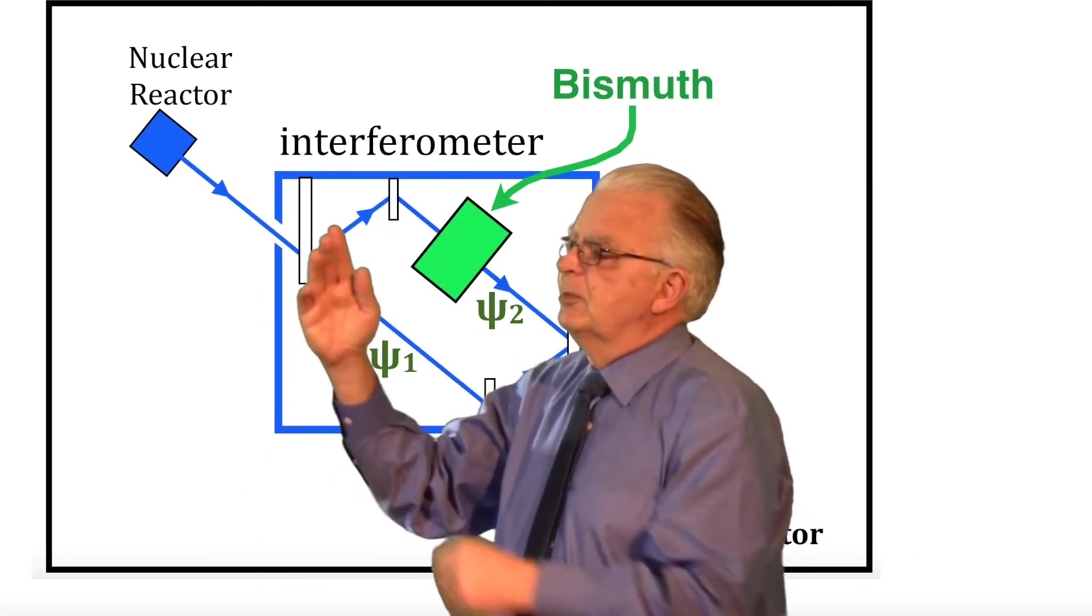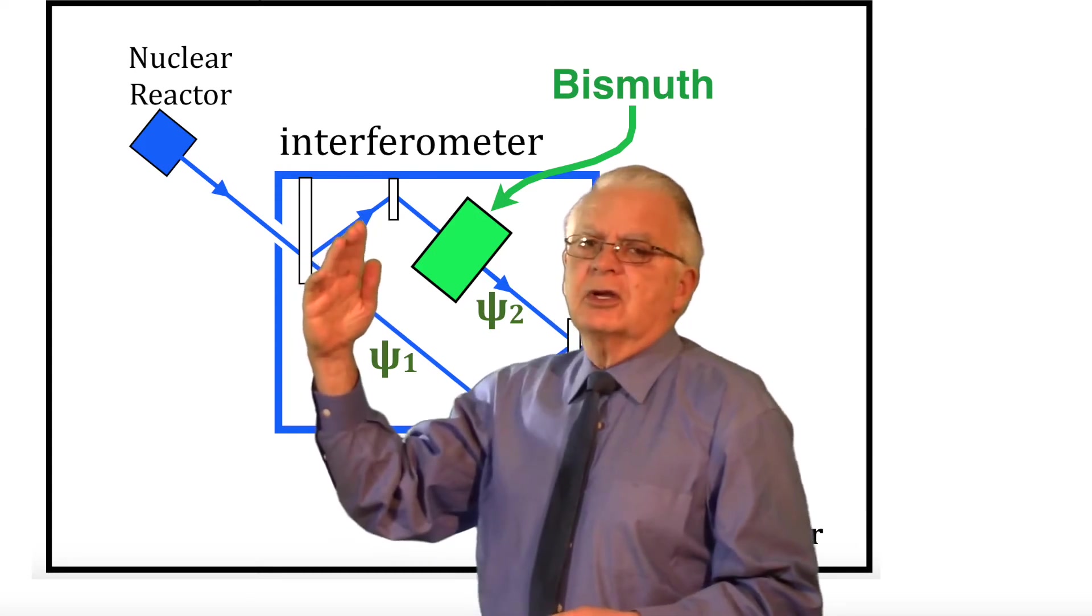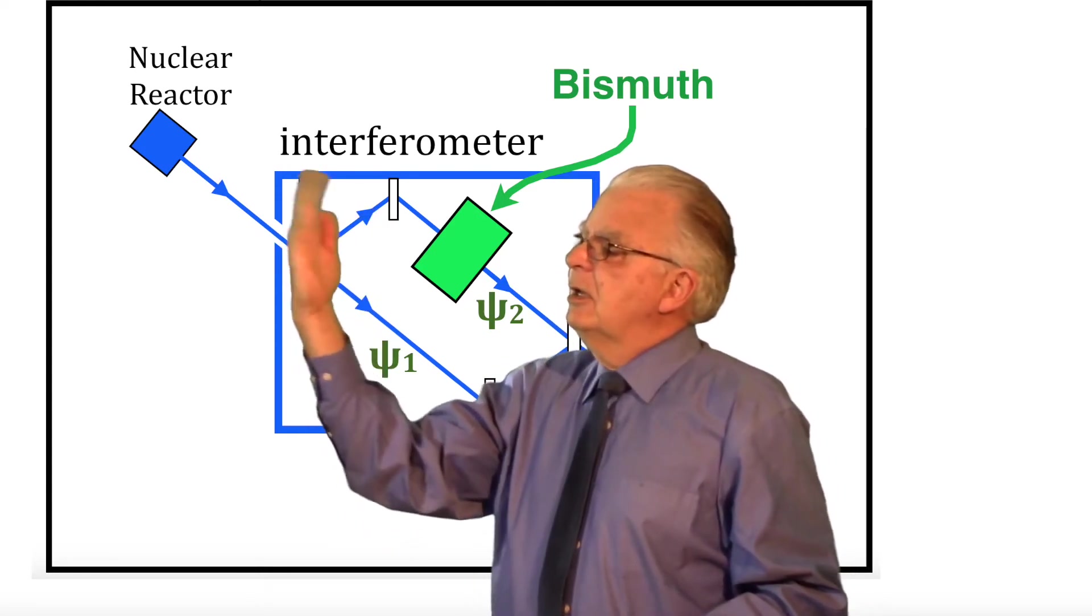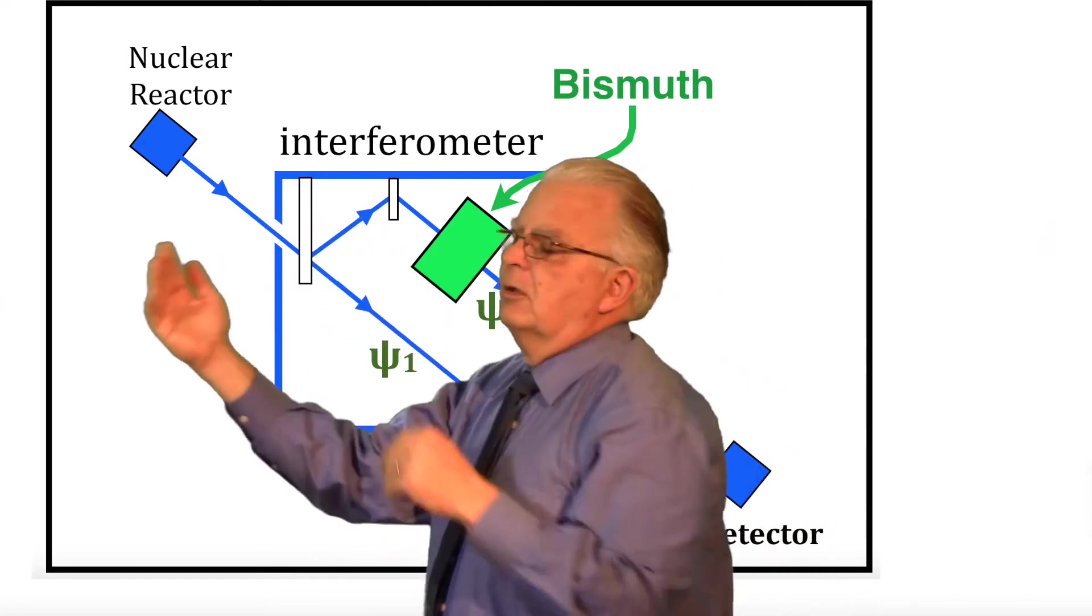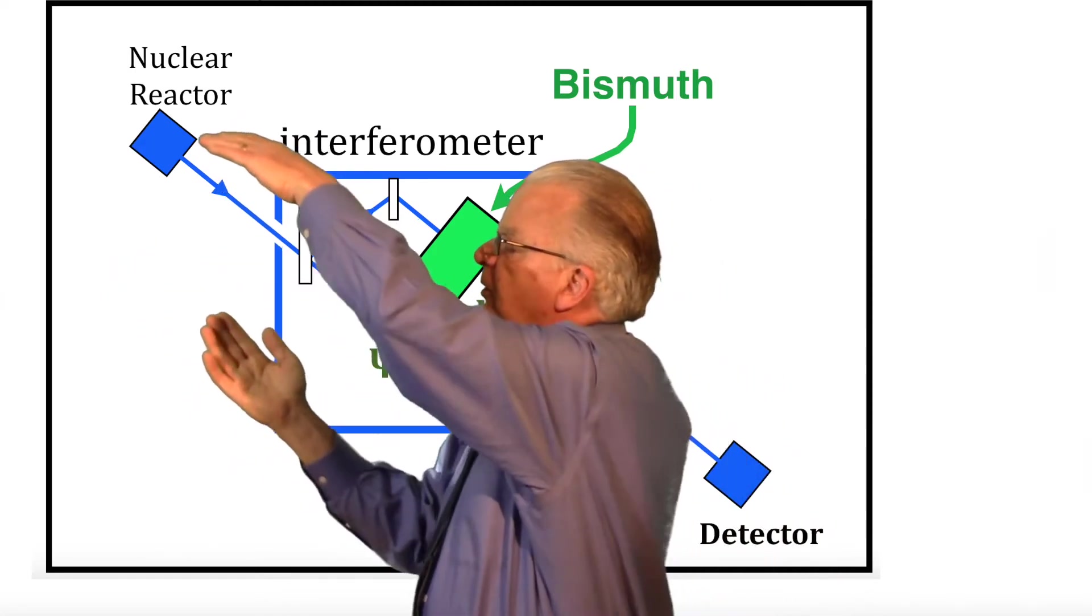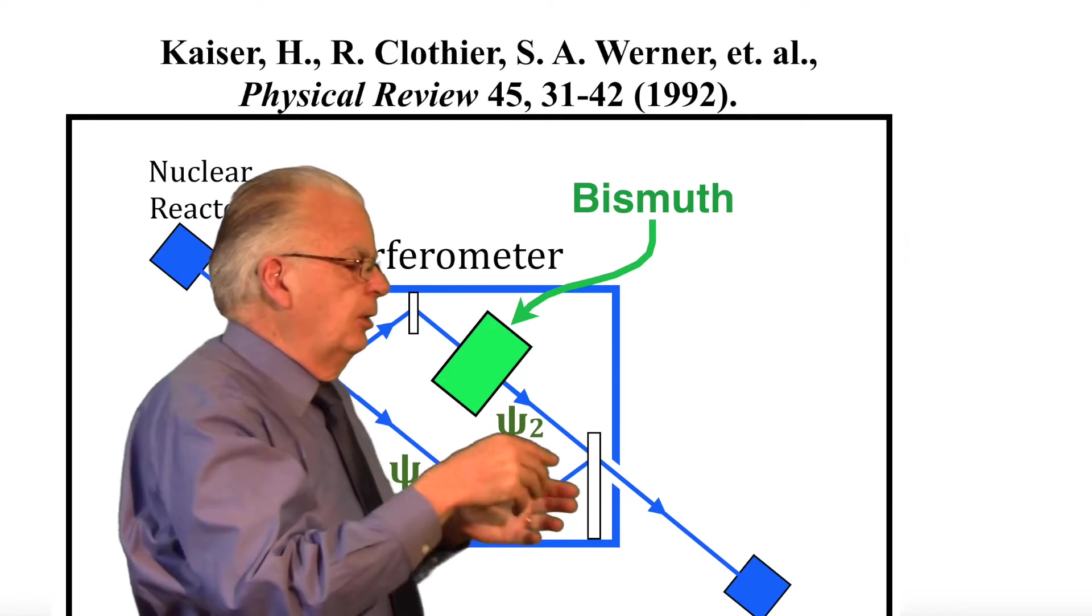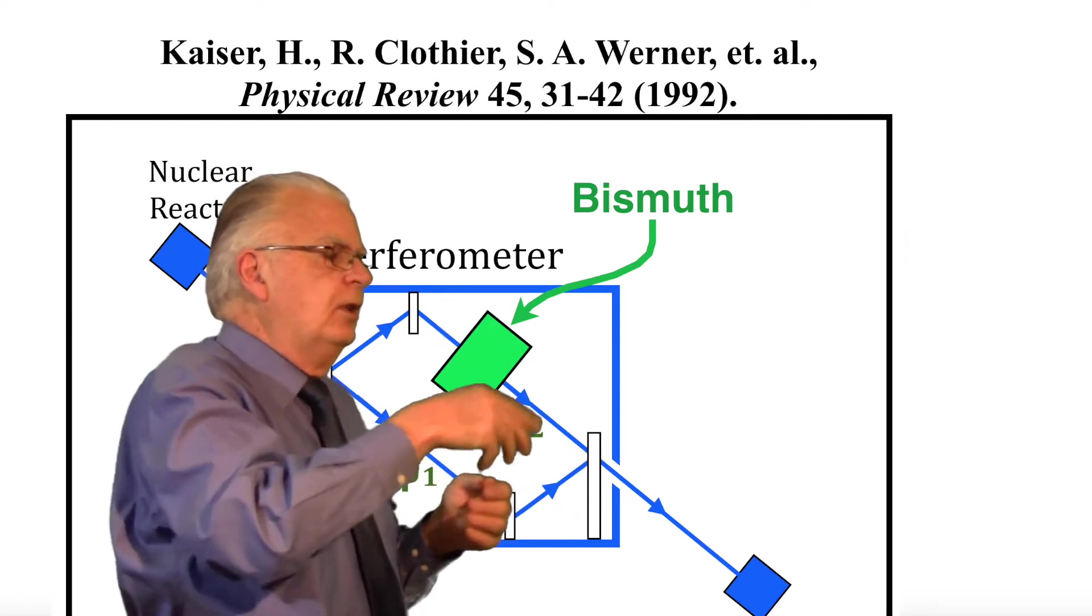Now right here where the waves split into Psi-1 and Psi-2, there is an aluminum plate oscillating backwards and forwards so that the phase of Psi-1 is different than the phase of Psi-2. And when they are recombined down here in the final plate to leave the interferometer, there is interference, so what the detector sees is sine waves, an interference pattern.